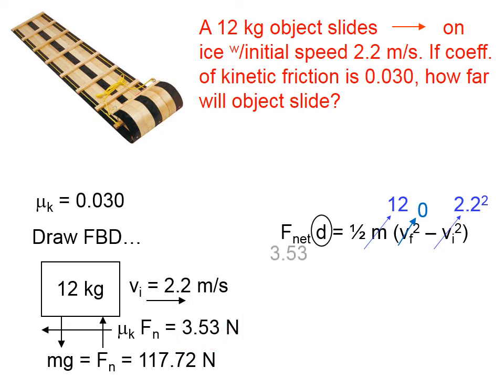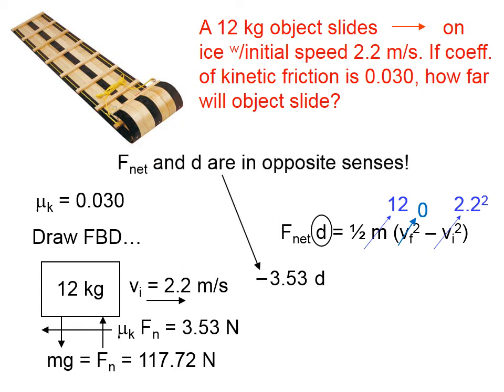So the net force is, in fact, 3.53 newtons, because the weight and the normal force are equal and opposite, so they cancel each other. Multiply by the distance, and it is very important here that we pop an extra negative sign in front of that. And that's because, if you remember, when we talked about work, if the net force and the displacement were in opposite senses, that would be negative work. So we need to mentally put in that negative sign. The right side of the equation boils down to that. We can see now that the negative signs end up canceling, and the distance is 8.2 meters.